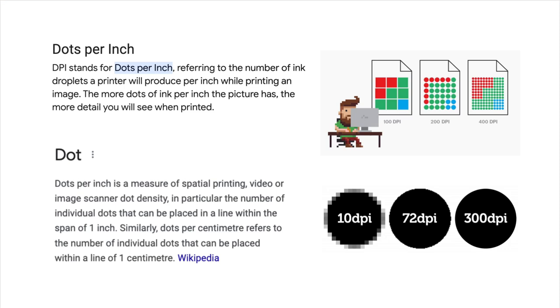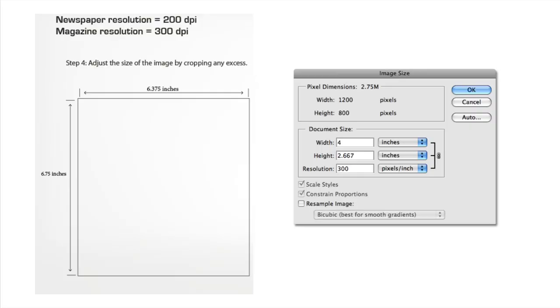Pixels are not the same as inches or dots. DPI is for printing — dots per inch. You may have heard pixels per inch, but that does not relate to printing. Pixels per inch is related to monitors and screens — digital, what you see. DPI is dots per inch, used by inkjet printers or when printing something in the real world like a magazine.